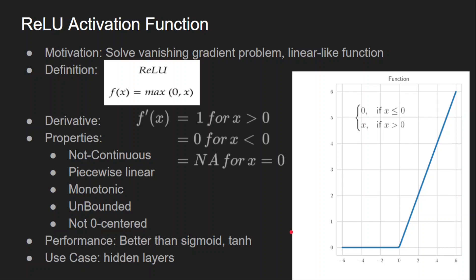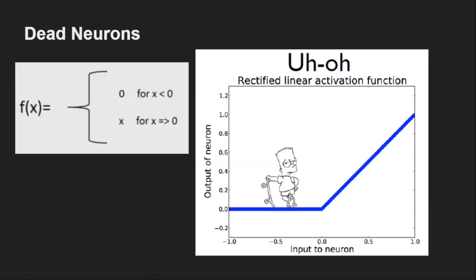Performance-wise, ReLU performs much better than sigmoid and tanh, and it is the go-to function for hidden layers. It cannot be used for output layers because for classification it cannot be viewed as a probability. ReLU has one problem called dead neurons or the dying ReLU problem: the output is zero for all negative values, so neurons become dead and won't be useful in the further training process.